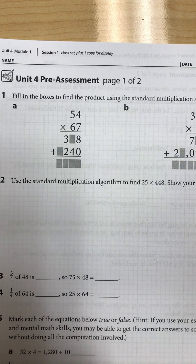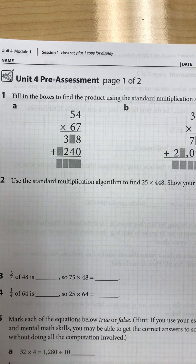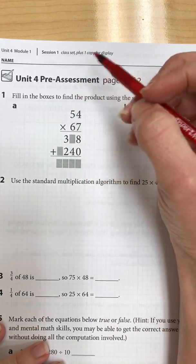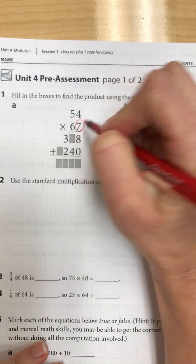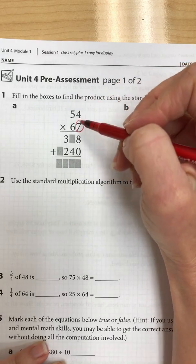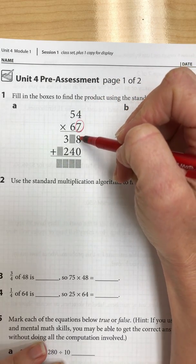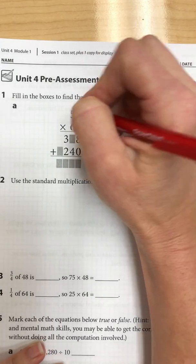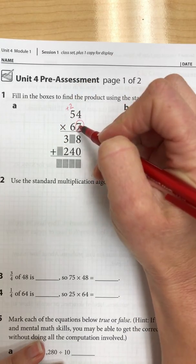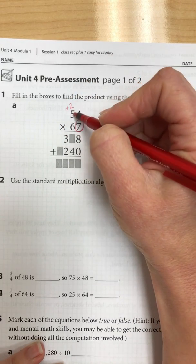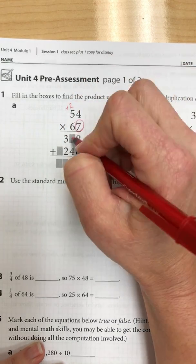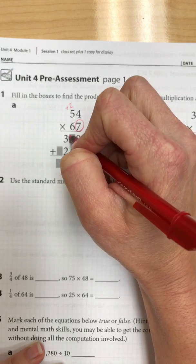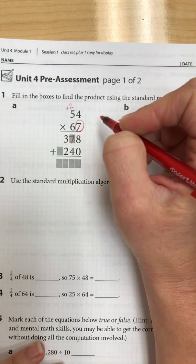Number one, fill in the boxes to find the product using the standard multiplication algorithm. So all we have to do is go through and fill in the missing spots. First we start with the number 7 in the ones place. 7 times 4 is 28, we have an 8 and we carry our 2. Then 7 times 5 is 35 plus 2 would make 37. So we put our 7 here and the 3 is already there for us.